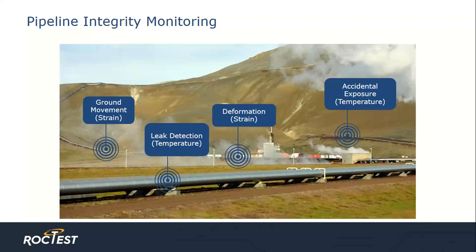Pipeline integrity is another example of long infrastructure monitoring. You can see two different uses of distributed technology here. The first is strain monitoring, as occurs with ground movements adjacent to the pipeline or in a settlement or heave scenario. The other use is temperature monitoring, when monitoring for leaks or in a situation where the pipe has been unearthed, exposing the pipeline to ambient air. In that instance, the temperature change is immediately reflected in the user interface and an alarm would be triggered.